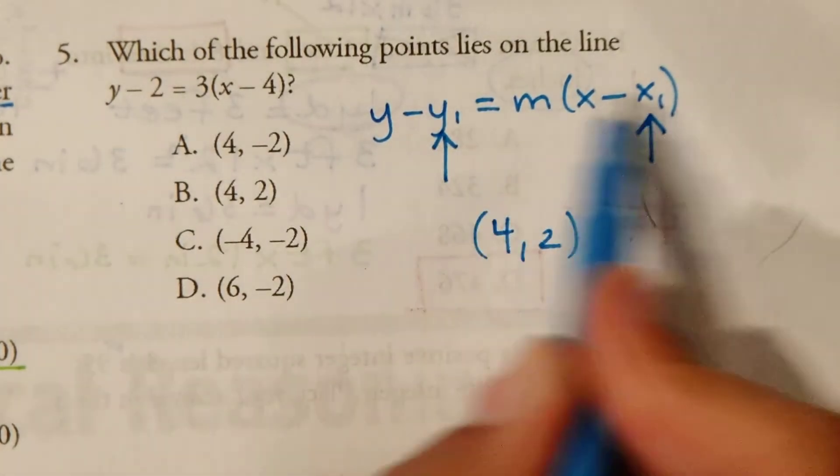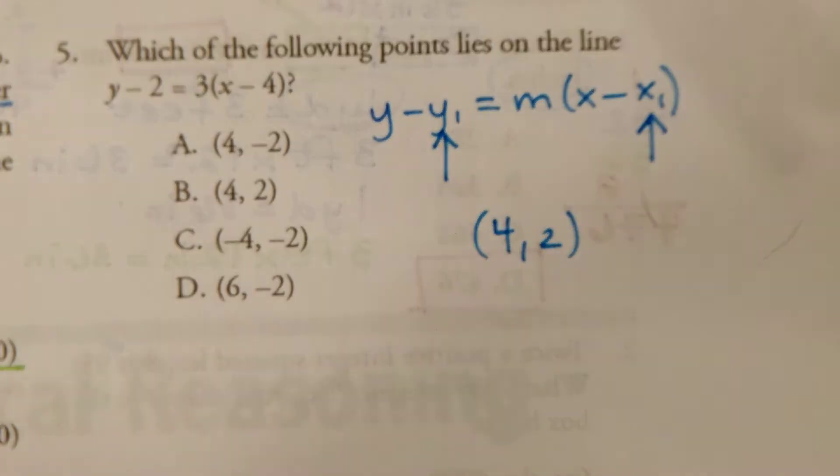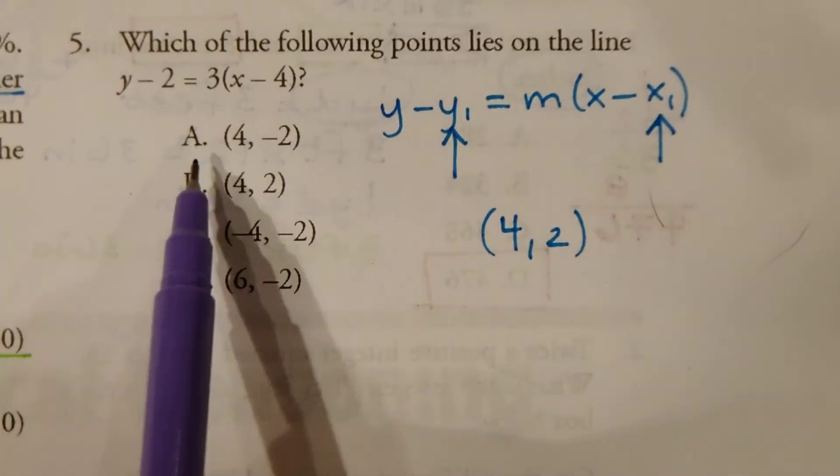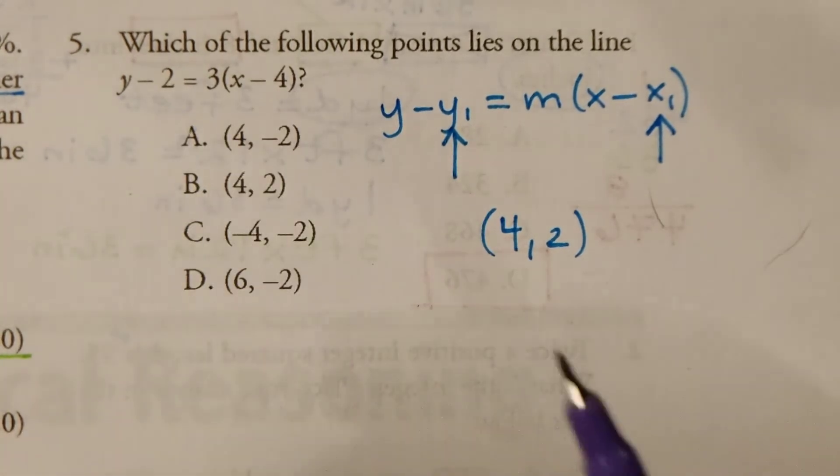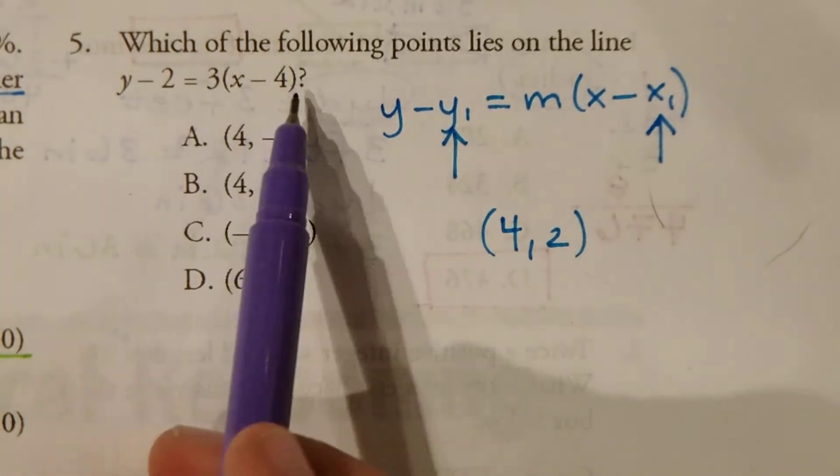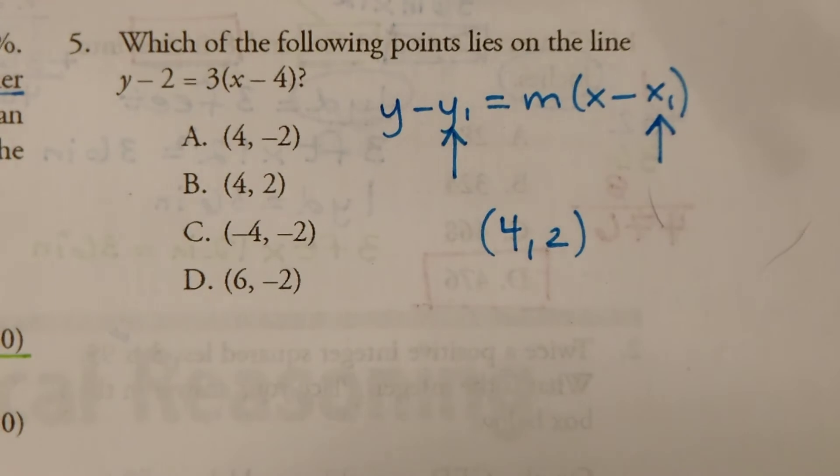Now, if you're not familiar with point-slope form, that's fine. We can do a trial method. So, what we can do is start with A and say, okay, does this work? Does this point lie on this line? How would we know that? If we put these values in and it's equal, then we know it's true.